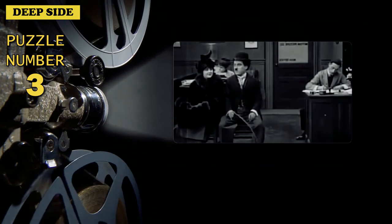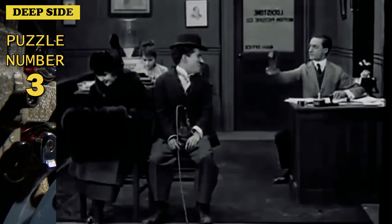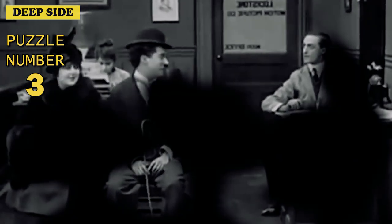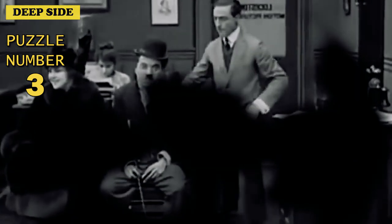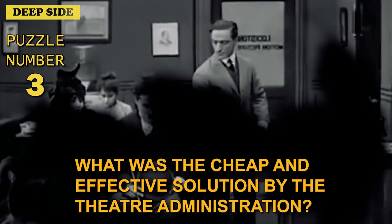Puzzle number 3. At the dawn of cinema, one American movie theater's profits began to go south. The viewers were annoyed with the ladies who didn't take off their hats in the auditorium, blocking the view of the screen. What was the cheap and effective solution by the theater administration?